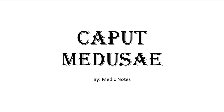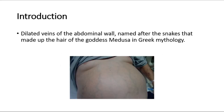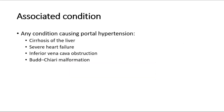Welcome back to another video of Medic Notes. This video is on Caput Medusa. Caput Medusa is used to describe the dilated veins of the abdominal wall, named after the snakes that made up the hair of the goddess Medusa in Greek mythology. In this picture, you can see the dilated veins on the abdomen.